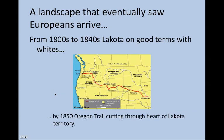This northern prairie landscape eventually saw Europeans arrive by the 1800s, first famously with the Lewis and Clark expedition of the early 1800s. Lewis and Clark came into contact with the Lakota Sioux and generally got along well with them, mentioning the Lakota by name in their journals and remarking how hospitable they had been to the white explorer party.